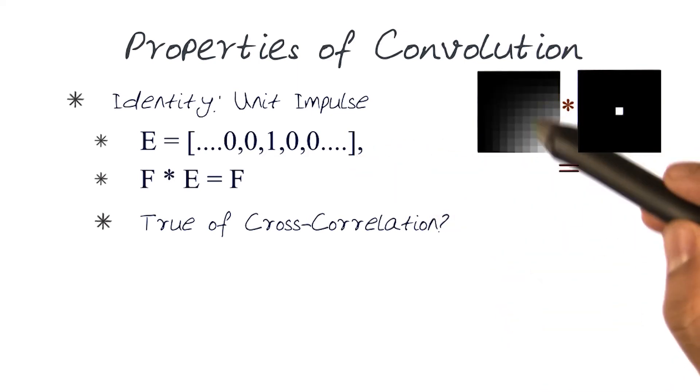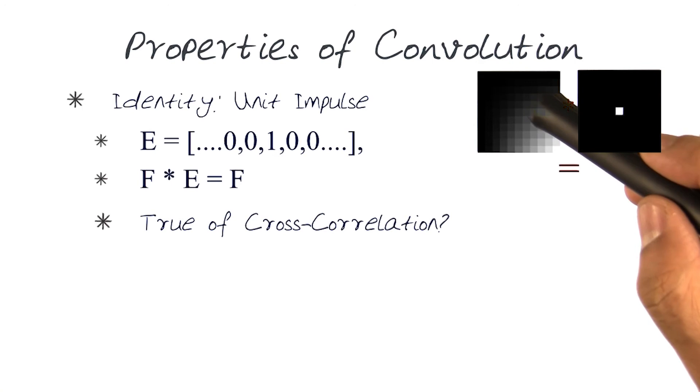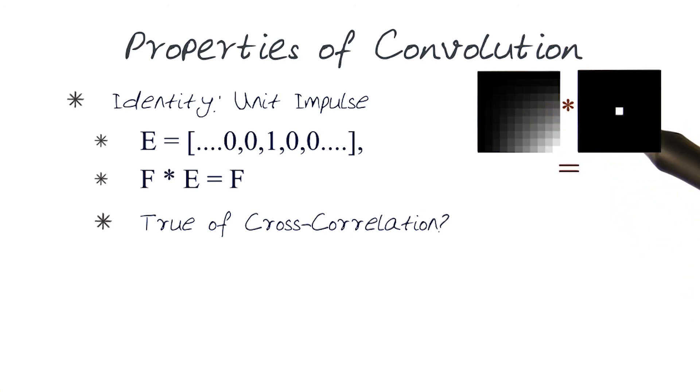Just to prove this point here, I take this kernel, or an image here. And this is my impulse, and notice it's not symmetric. And if I just do a convolution with this, we will get the original one back.